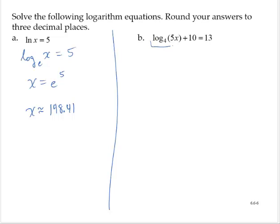I want to get the logarithmic part by itself. So the first thing I'll do is subtract 10 from both sides. So then the log base 4 of 5x is equal to 3.